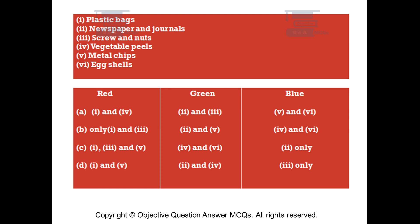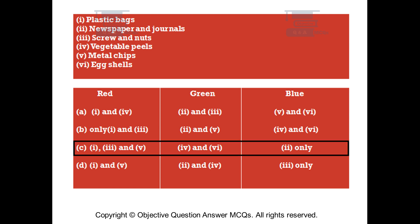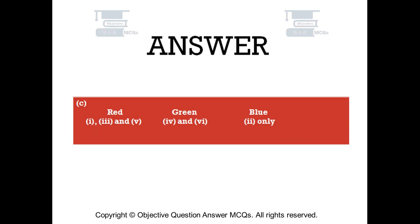The right answer is Option C. Red bin: items 1, 3, and 5. Green bin: items 4 and 6. Blue bin: item 2 only.